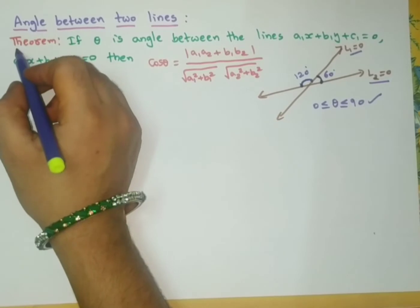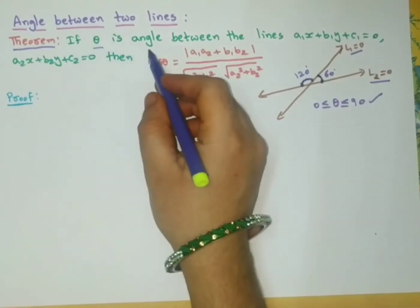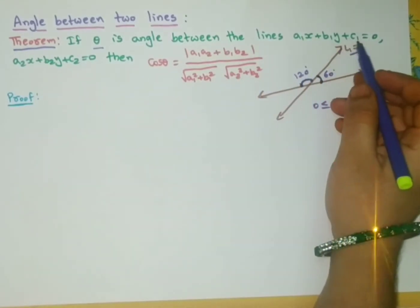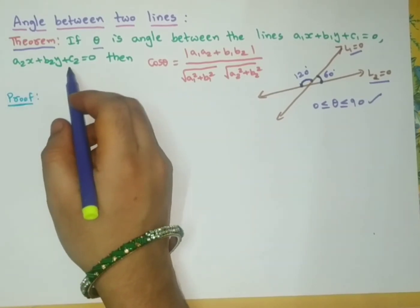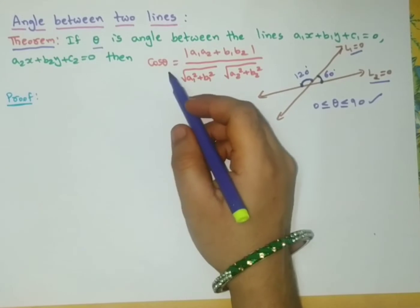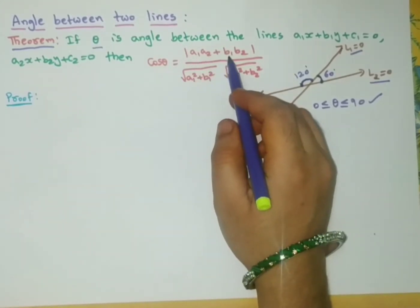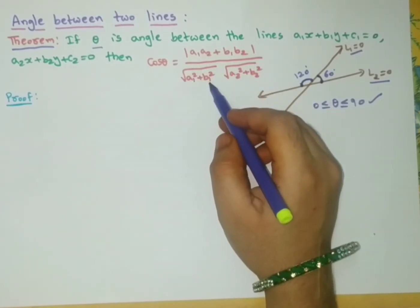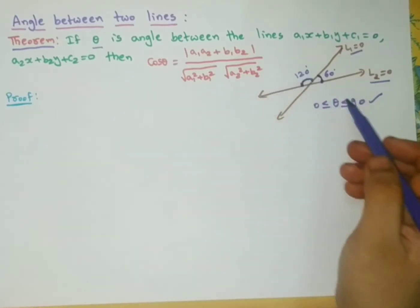Let us discuss the first theorem. If theta is the angle between the lines a1x + b1y + c1 = 0 and a2x + b2y + c2 = 0, then we get: cos theta = |a1·a2 + b1·b2| divided by √(a1² + b1²) × √(a2² + b2²).